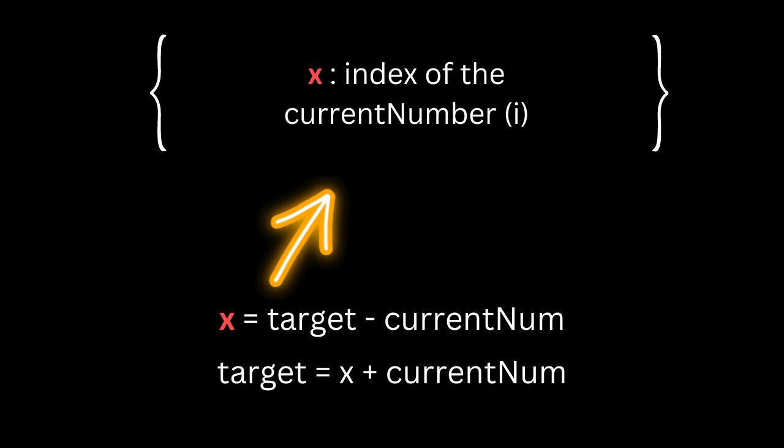So x equals target minus y. Then we say, is x in our hash table? If true, we just return x and y. Otherwise, we store the current number inside the hash table and we'll give it a value which is the index of the current number inside the array.